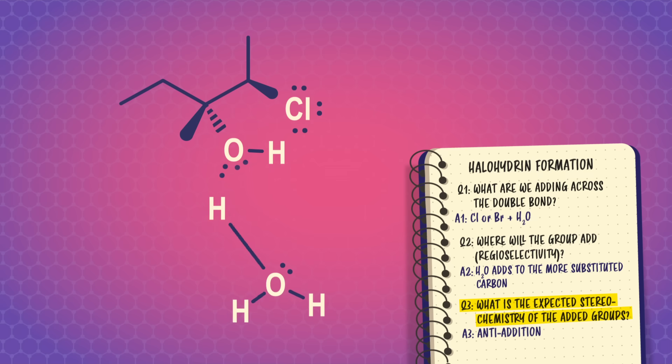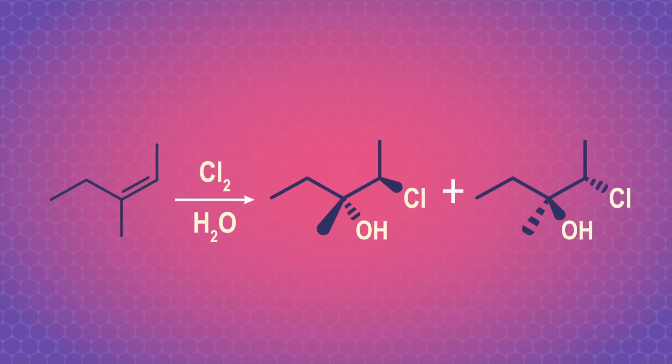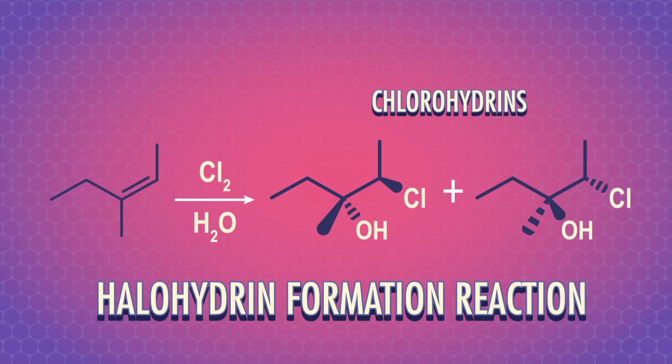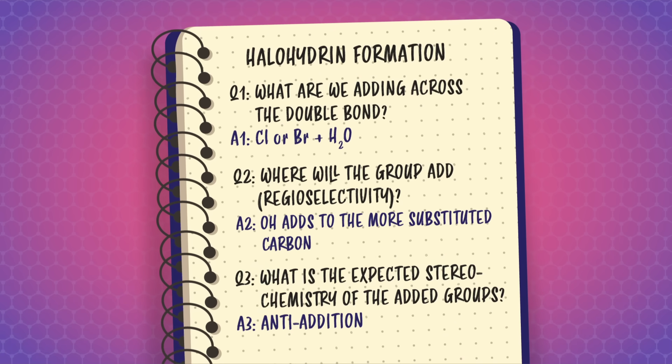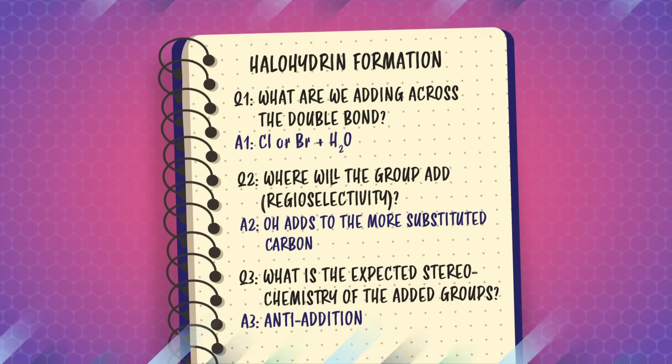And then a second water molecule deprotonates the oxonium ion, forming an alcohol group in the final products. They're called chlorohydrins because this is a halohydrin formation reaction. We can sum up halohydrin formation with this note card.